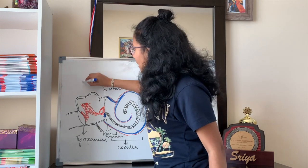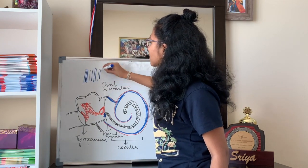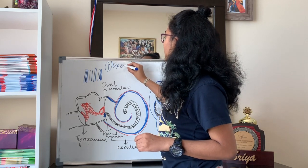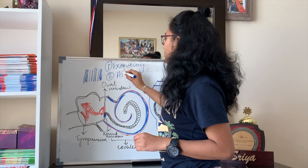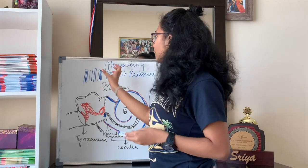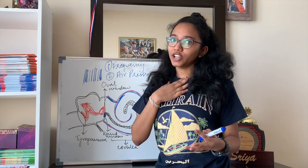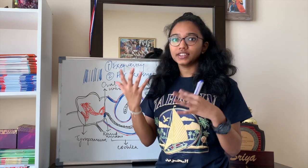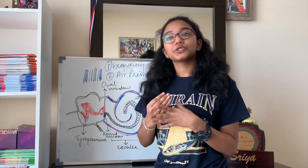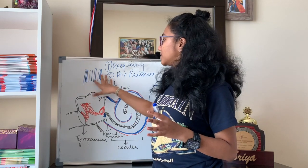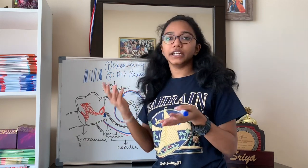Sound is not a transverse wave but a longitudinal wave, composed of compressions and rarefactions. There are two properties of sound waves you need to know: number one is frequency, and the second is air pressure. Frequency is basically one divided by time period, or the number of wavelengths covered per unit time. Frequency determines the pitch of the sound — higher frequency means higher pitch. Air pressure is the pressure exerted by the wave, which determines the volume or loudness of the sound.